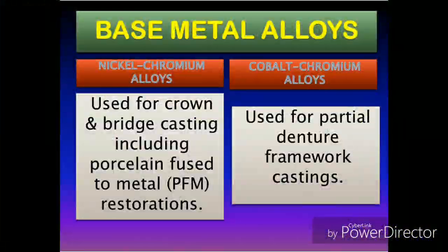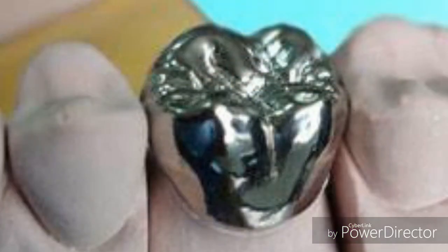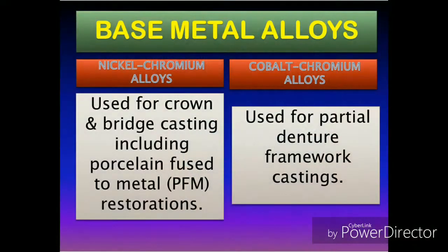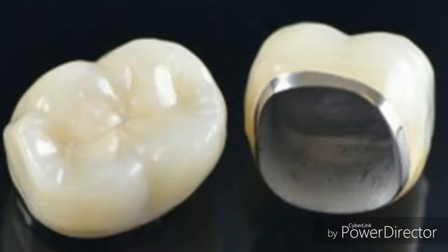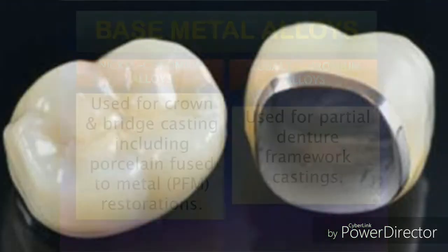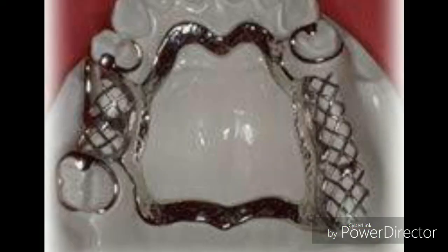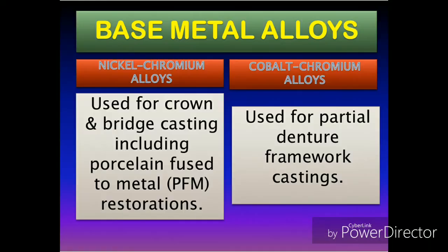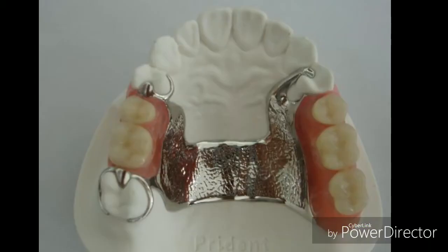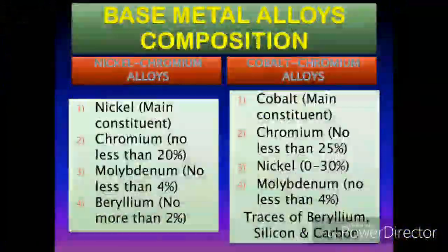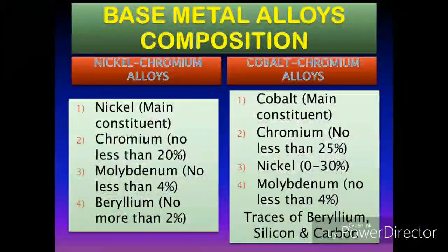The difference in application of these two alloys is that nickel-chromium casting alloys are used for crown and bridge casting frameworks, including the porcelain-fused-to-metal restorations, whereas cobalt-chromium casting alloys are used for partial denture framework castings. Now let's go through the chemical composition of these base metal casting alloys as specified by ISO standard.